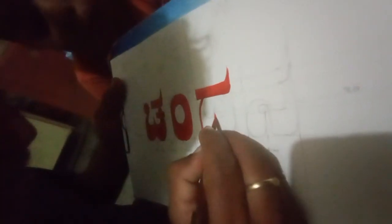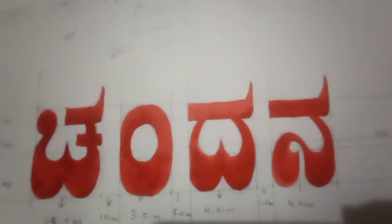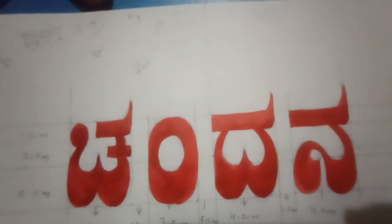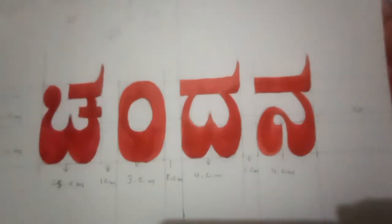Now you can start applying the color. If you are using watercolor, dear students, first you have to complete the outline of the letter. After that you can fill in the center. It can be whichever color you would like — red, yellow, green — or a combination of colors can also be used. In this way, start giving the outline first, then fill in the center. This is letter writing. Hope you understood how to write the Kannada letters. If you keep the measurements in mind, you can write the letters in a very systematic and creative way. Thank you.